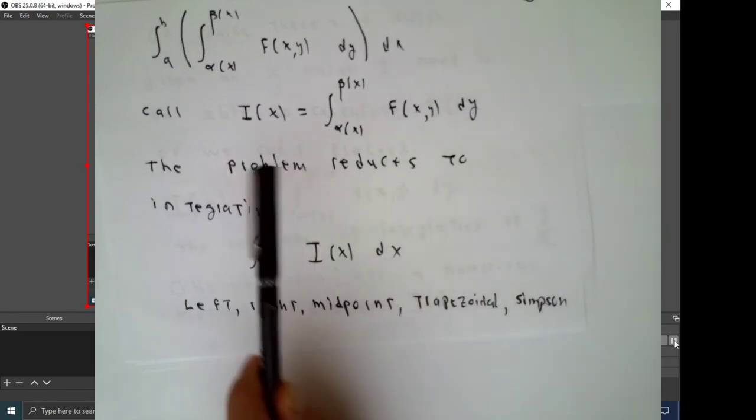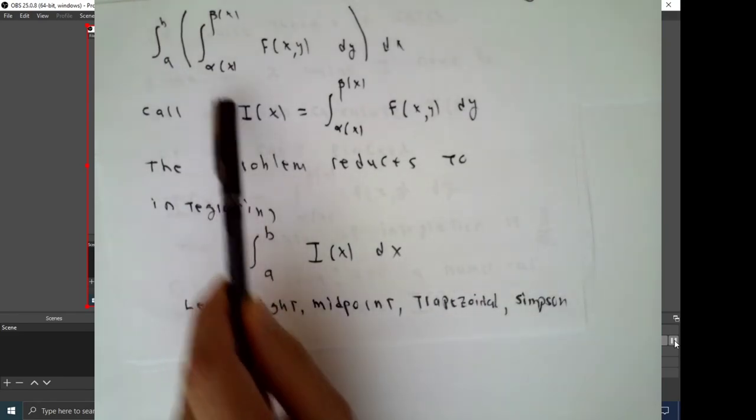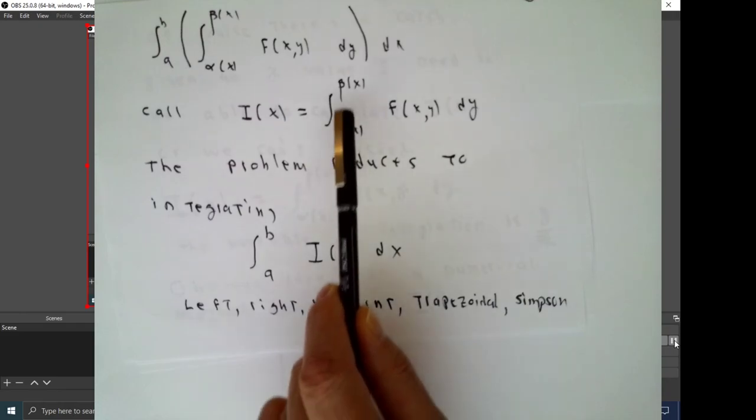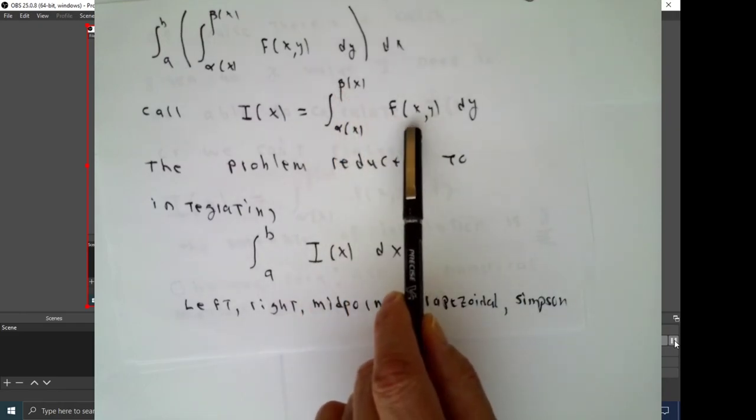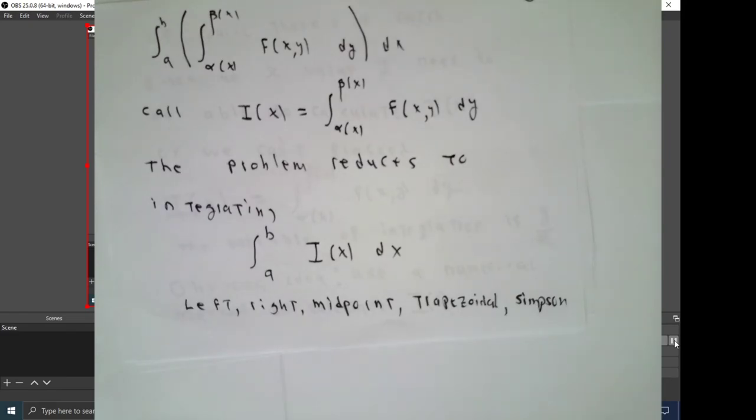As we said before, we're going to find a way to calculate the inside integral. The integral from alpha of x to beta x, f of x and y, dy. People often get confused about this. The answer can depend on x, so I don't want to tell you a numerical value for the x. I want to be able to find this function, i of x, for a given x value that you give to me. Once we know how to do that, then we can estimate this integral by using any of our methods.